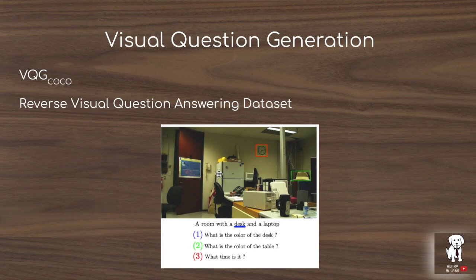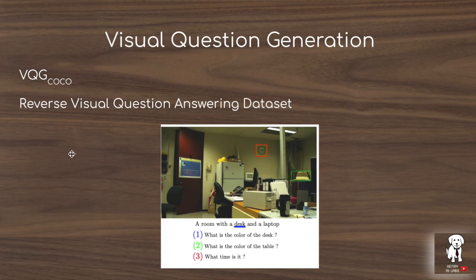In this paper the authors experiment with visual question generation — taking an image and asking questions about its content, such as 'What is the color of the desk?' or 'What time is it?' based on a clock. The datasets used include the MS COCO dataset and an extended MS COCO dataset for visual question generation (~5,000 data points with ~2,500 training examples). They also use the VQA dataset, reversing it so the input question becomes the target output.